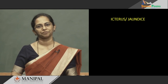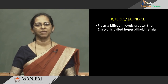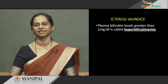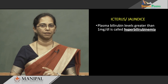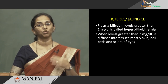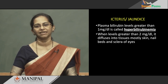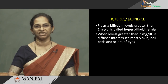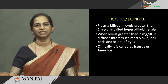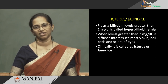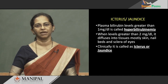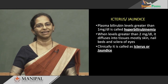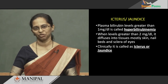Plasma bilirubin levels above 1 milligram per deciliter is called hyperbilirubinemia. When it exceeds 2 milligrams per deciliter, bilirubin deposits in the skin, nail bed, and eyes, making the person look yellow — that is when we call it ictrus or jaundice. Plasma bilirubin greater than 2 milligrams per deciliter is declared as the clinical condition jaundice.